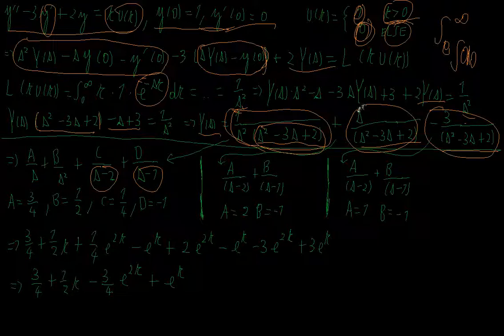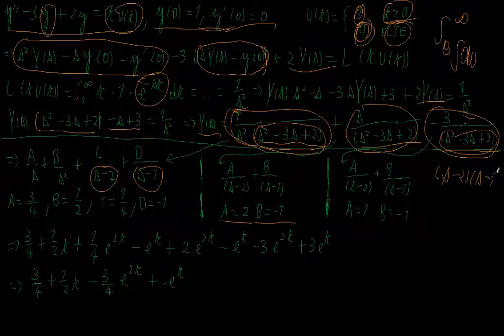For the second part, s over (s squared minus 3s plus 2), I write it as A over (s minus 2) plus B over (s minus 1), giving A equals 2 and B equals minus 1. For the third part, minus 3 over (s squared minus 3s plus 2), I write it as A over (s minus 2) plus B over (s minus 1), giving A equals 1 and B equals negative 1.